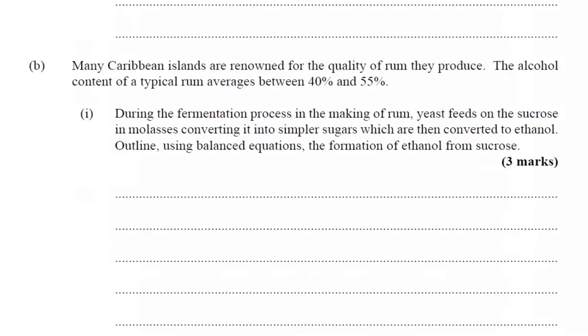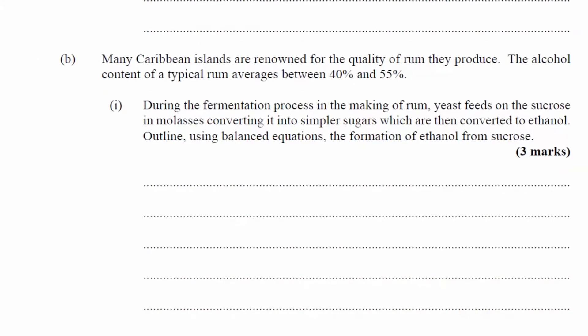Many Caribbean islands are renowned for the quality of rum they produce. The alcohol content of a typical rum averages between 40% and 55%. Part one, during the fermentation process in the making of rum, yeast feeds on the sucrose in molasses, converting it into simple sugars which are then converted to ethanol. Outline using balanced equations, the formation of ethanol from sucrose.